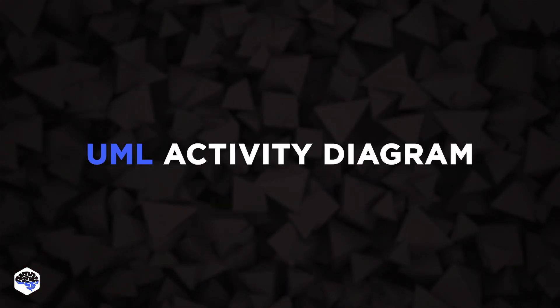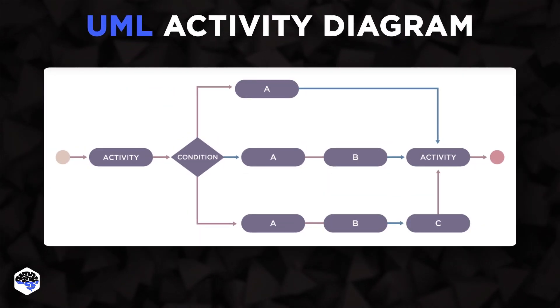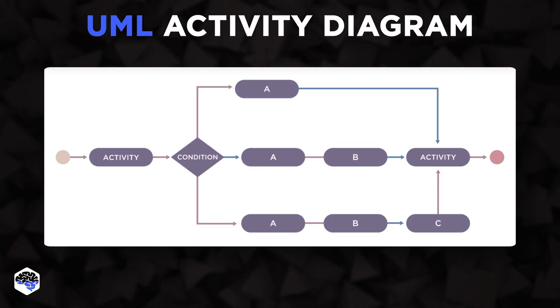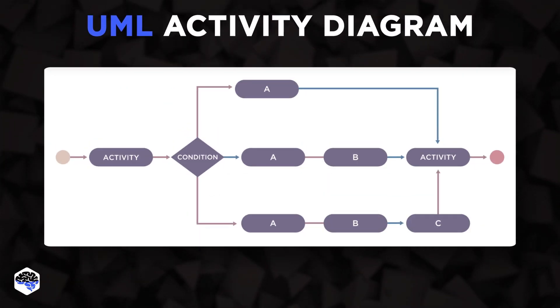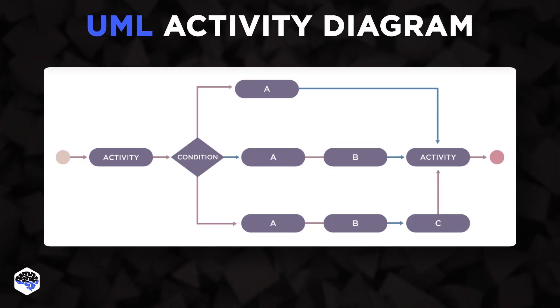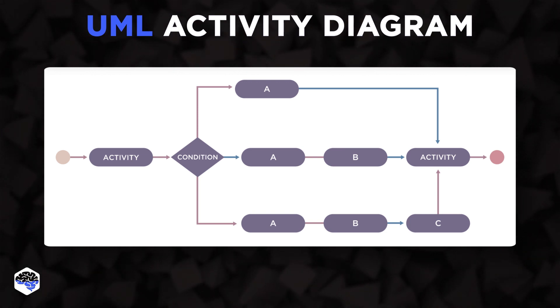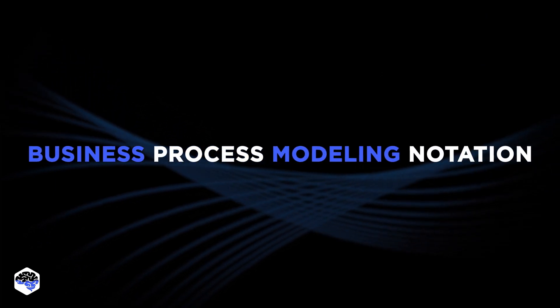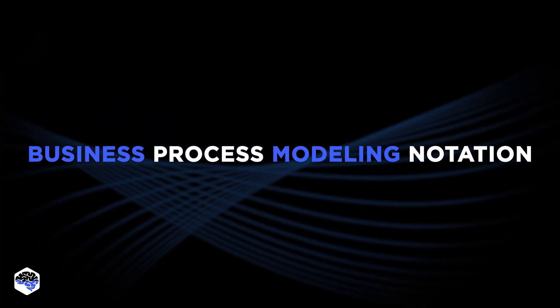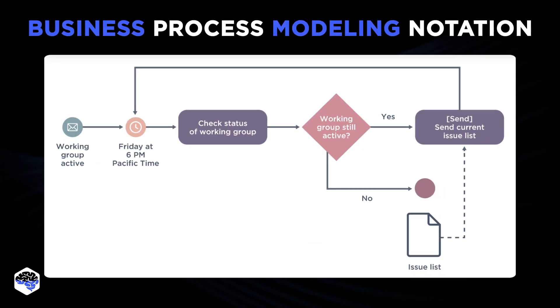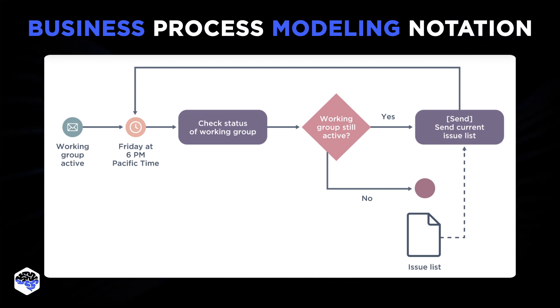Next, UML Activity Diagram — it was created for the visualization, documentation, and specification of software systems, but now it is adapted to model business processes. Next, Business Process Modeling Notation — it allows organizations to describe procedures using a generic, easy-to-understand visual illustration of steps.